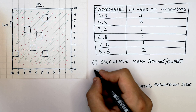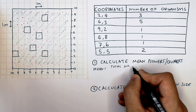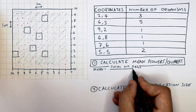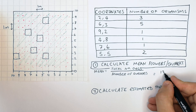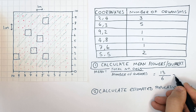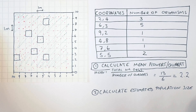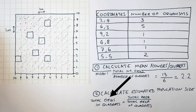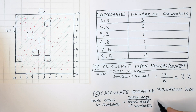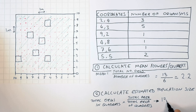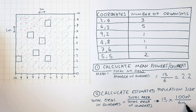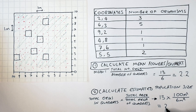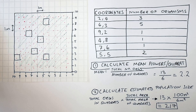To calculate the mean flowers per quadrat: total number of organisms ÷ number of quadrats. The total is 13 organisms divided by 6 quadrats = 2.2 flowers per quadrat. Then for estimated population size: 13 × (10 × 10 m²) ÷ 6 m² = 13 × 100 ÷ 6 = approximately 217 flowers as the estimated population size.